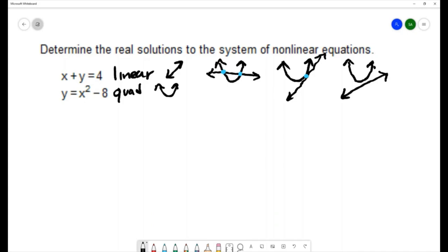With the substitution method the first step is to isolate one of the variables or solve for one of the variables in the system that we're given. Y is solved for and so the first step of the substitution method is done for us.